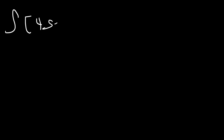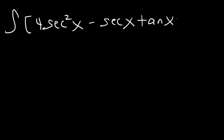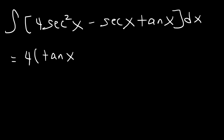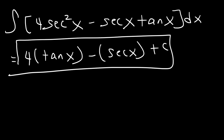Here's another one to try: find the antiderivative of 4 secant squared x minus secant x tangent x. The antiderivative of secant squared x is tangent x, and the antiderivative of secant x tangent x is secant x. So the answer is 4 tangent x minus secant x plus the constant of integration c.